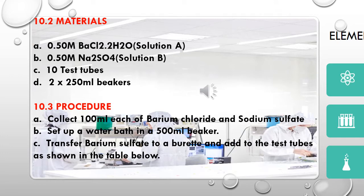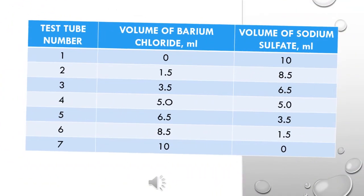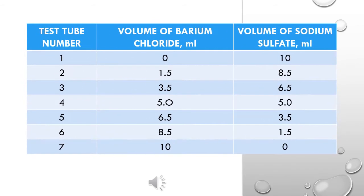Procedure A: Collect 100 milliliters each of Barium Chloride and Sodium Sulfate. B: Set up a water bath in a 500 milliliter beaker. C: Transfer Barium Chloride to a burette and add to the test tubes as shown in the table below. You will need 7 test tubes, to be filled with appropriate volumes of Barium Chloride. Use a 10 milliliter graduated measuring cylinder to measure the indicated volumes. Place the 7 test tubes in a water bath.